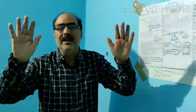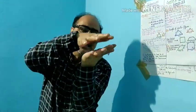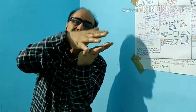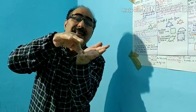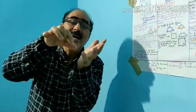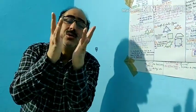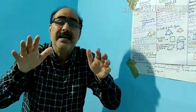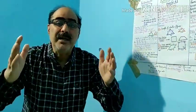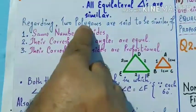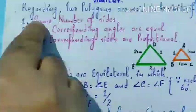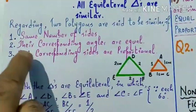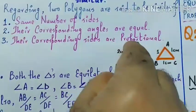Proportional के लिए समझाओंगा — जैसे दो hands हैं, same shape, same size। अगर मैं इनको एक पर रखता हूं तो corresponding उंगली उस उंगली पर आए — यह corresponding side वाला concept है। इन दोनों की length की ratio बराबर है — corresponding sides are in the same ratio, means corresponding sides are proportional। तो तीन conditions चाहिए two polygons को similar होने के लिए।